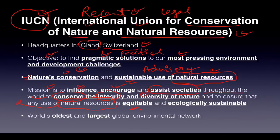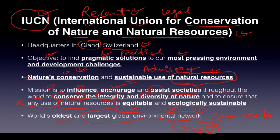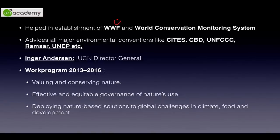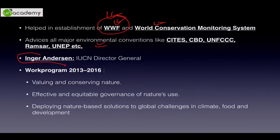IUCN ensures that natural resources are not exploited by capitalist countries with huge markets and capital; rather there is equitable sharing of those resources. Whatever extraction or exploitation occurs should be ecologically sustainable — they aim for a zero-waste cycle where input equals output. IUCN is the world's oldest and largest global environmental network; it helped establish the WWF — which is World Wildlife Fund for Nature — and the World Conservation Monitoring System.